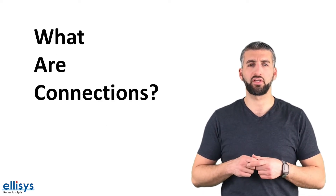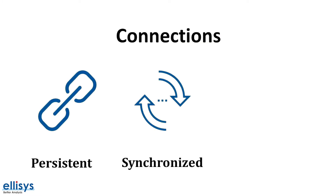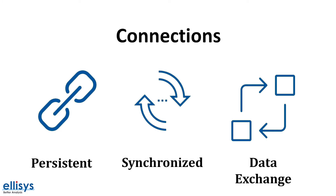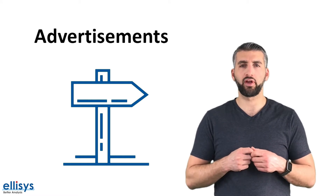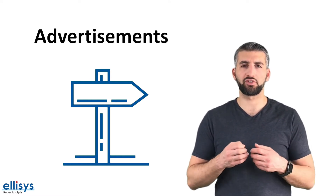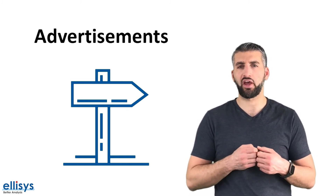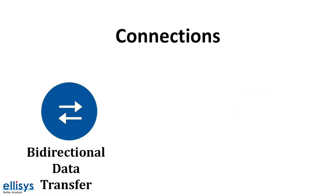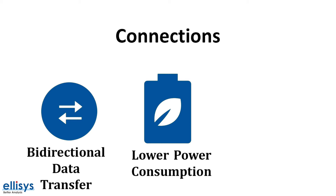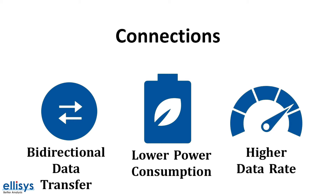So what are connections in BLE and what makes them so important? Connections are a way to establish persistent data communication that is synchronized and allows data to be exchanged between two devices. We've talked about advertisements before and how they're a one-way street in terms of data transfer from the broadcaster or peripheral to devices scanning for advertising packets. Connections, on the other hand, enable bidirectional data transfer between two devices, and they also have advantages such as lower power consumption through adjustment of connection parameters, as well as higher data transfer speeds.